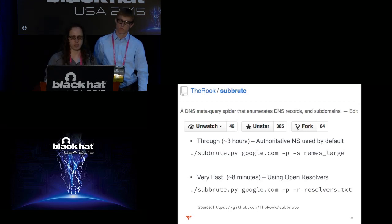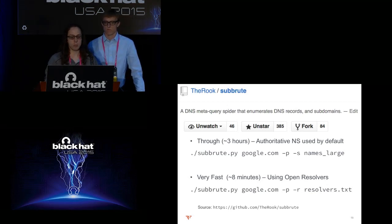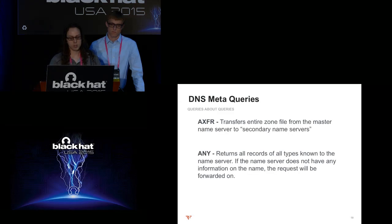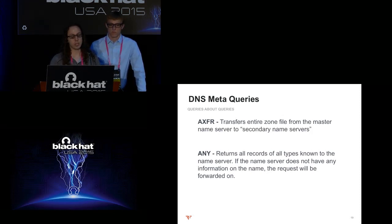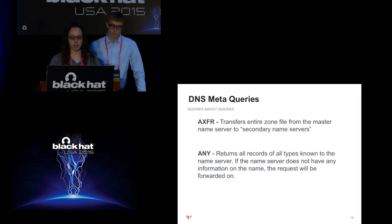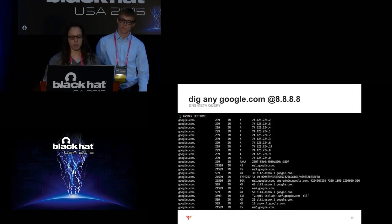The -p switch prints all records instead of just subdomains. The -s switch specifies the subdomain list to use. There's also a very fast option: -r uses open resolvers as a proxy, making it pseudo-anonymous — none of your traffic goes directly to the target, it all goes through intermediaries. SubRoot is a meta-query spider. AXFR is a zone-transfer meta-query type; if supported by the target it's the easy button — you get every DNS record — but it's disabled on about 99% of websites. After AXFR fails, it falls back to the ANY meta-query type, which returns all records for a given name.